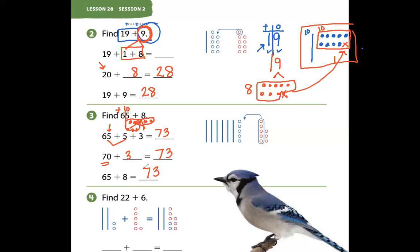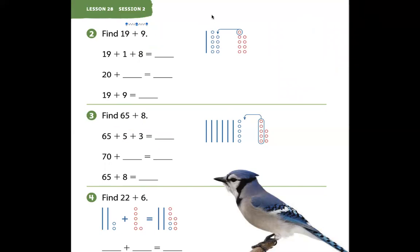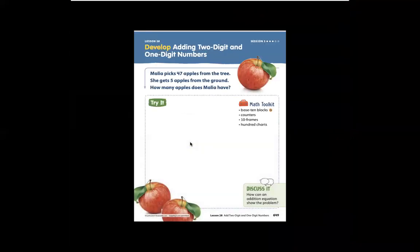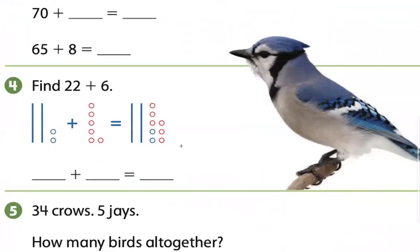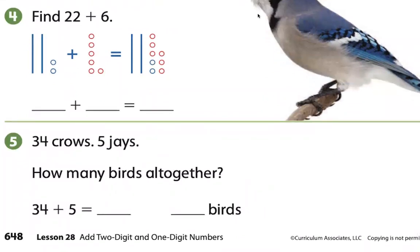Let's do problem number 4. I'm going to clear the screen and move the problem up. We're going to look at problem 4 and problem 5. Here it says find 22 plus 6. So they looked at 22 as tens and ones and drew two tens. Ten, ten, which has a value of 20.